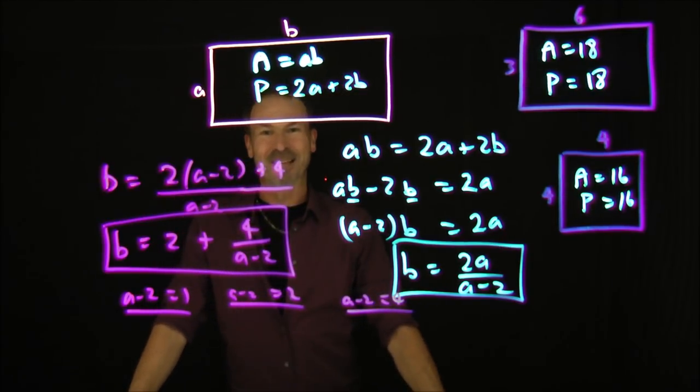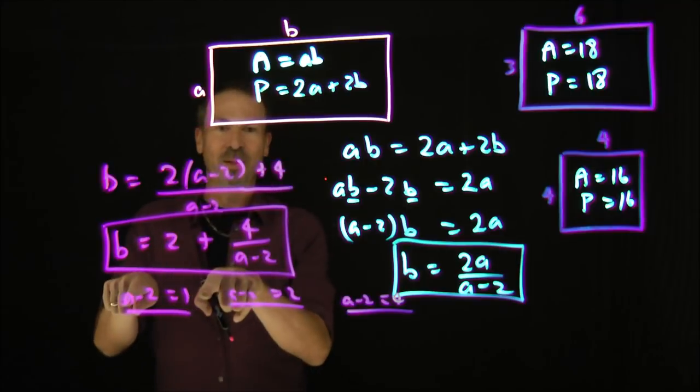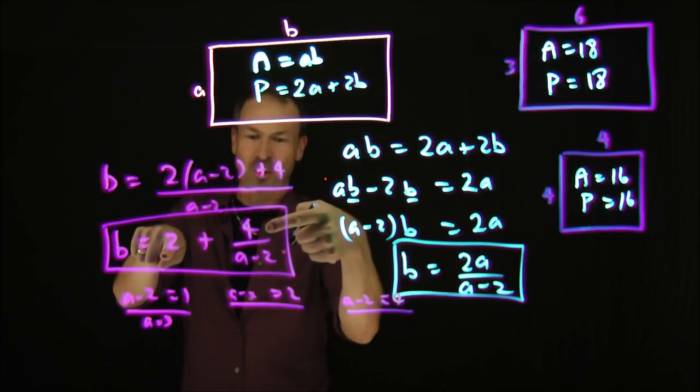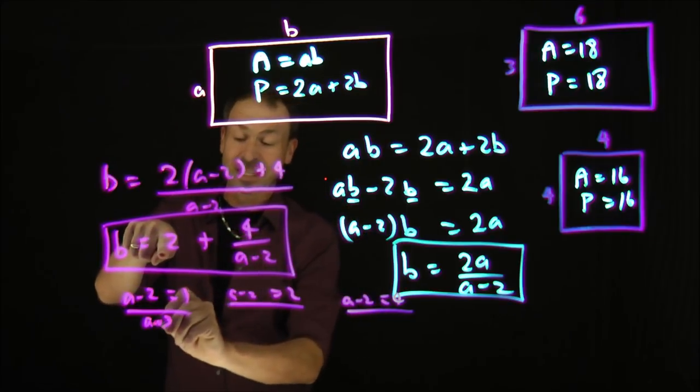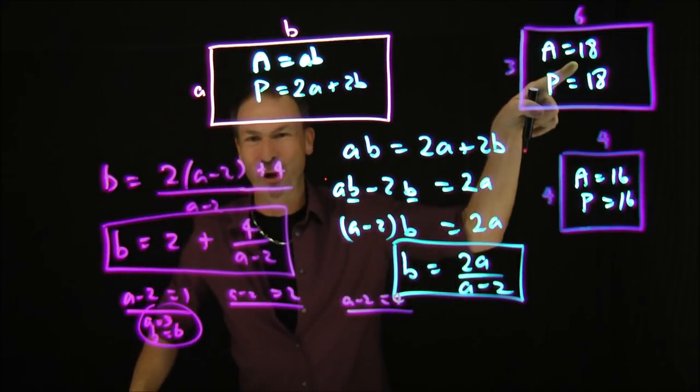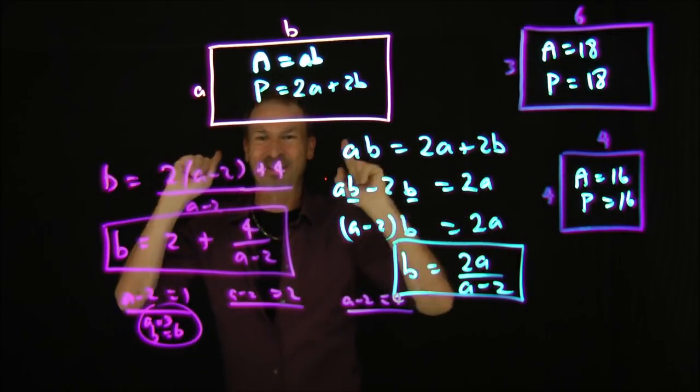Let's go through those cases. If A minus two is one, that means A better be three and B would have to be two plus four over one, six. B would have to be six. Three and six. Beautiful. That's one of the examples we got.